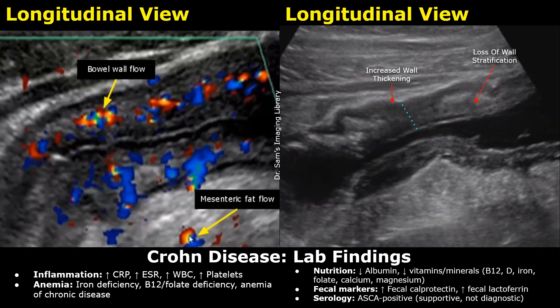Fecal markers are more specific. Fecal calprotectin can be elevated in intestinal inflammation and it is highly sensitive. Fecal lactoferrin is another neutrophil-derived marker which can be elevated in active disease.